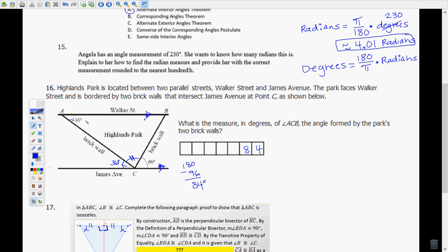What is the measure in degrees of angle ACB, the angle formed by the park's two brick walls? Here the brick walls here and here we have a triangle. We have parallel lines and we are going to use the parallel lines because again we have the Z formed by this pair of angles here at CAC this way and from here CAB.